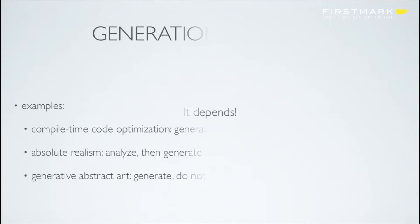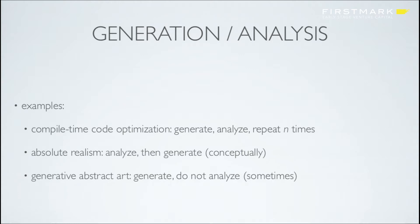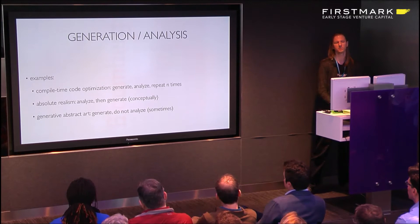How do I know which one to use? It depends. Compile-time code generation and optimization is an example: you generate compiled code, analyze it, do an optimization pass, run it again - that's the generate-then-analyze approach. If you're trying for photorealism, you probably want to be really close to your input, so generation by analysis for that. Or, for avant-garde art, you probably won't care as much about the analysis in the end.